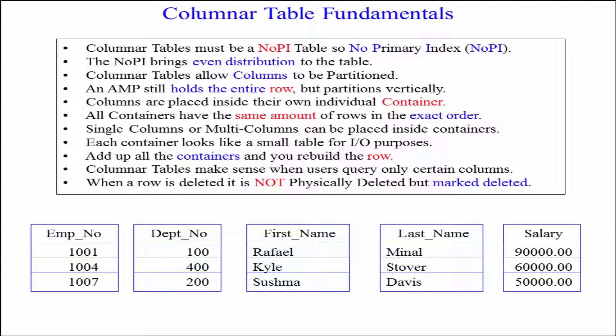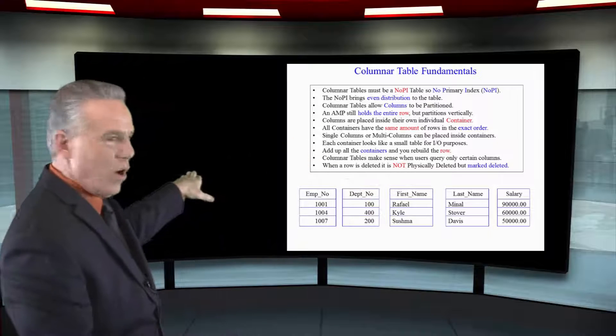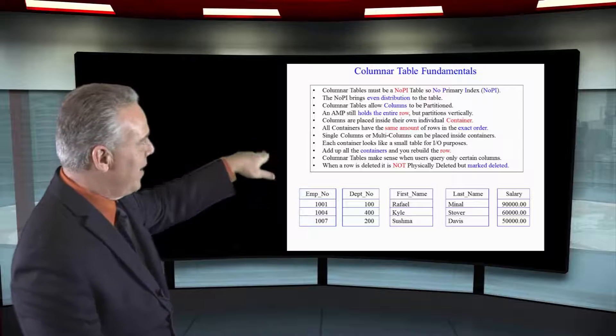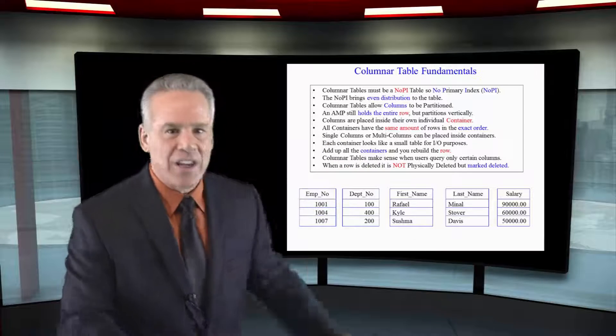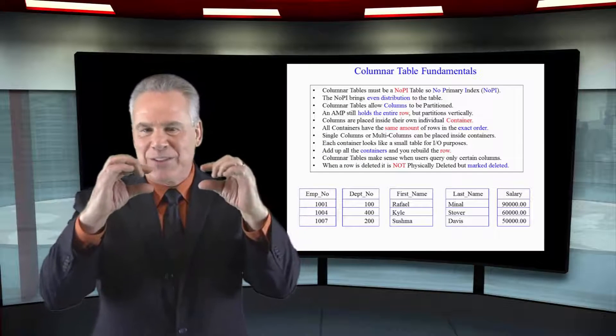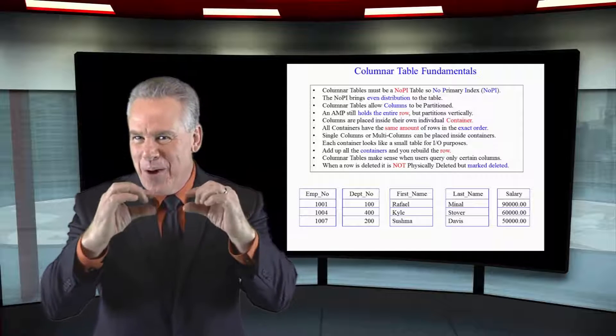That's why they make these no PI. They want the data spread evenly. Then, they keep everything set exactly. The first row in this container, the first row in this container, the first row in this, and this, and this. That really allows us to rebuild the row.